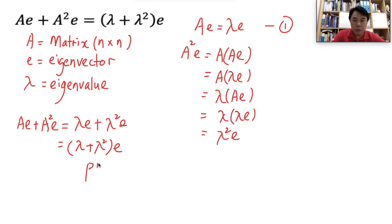This is the proof. A very simple proof of the relationship between a transformation matrix with its eigenvector and their corresponding eigenvalues here.